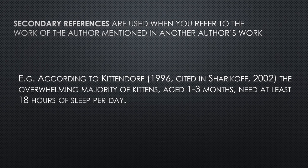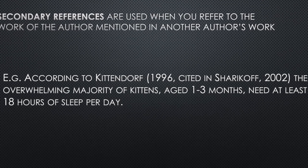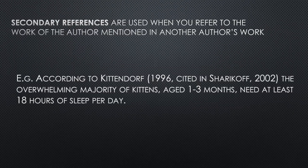We also have secondary referencing. Secondary references are used when you refer to the work of an author mentioned in another author's work. For example, if you're reading Sharikov's paper and he refers to Kittendorf's study, but you can't find Kittendorf's paper, you should say something like: 'according to Kittendorf 1996, cited in Sharikov 2002,' and then move on with what Kittendorf said in his study.